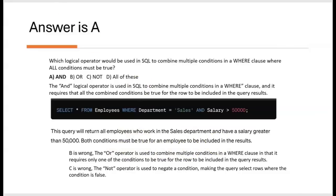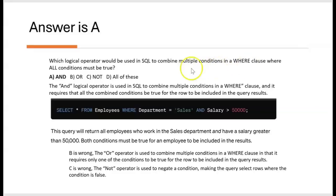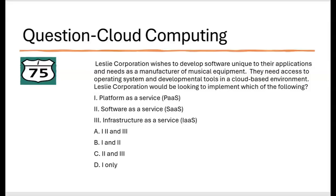B is wrong — the OR operator requires only one of the conditions to be true for the row to be included in the query result. C is wrong — the NOT operator negates a condition, making the query select rows where the condition is false, not true. This question asked which logical operator combines multiple conditions in a WHERE clause where all conditions must be true, and the answer is AND. A is correct.